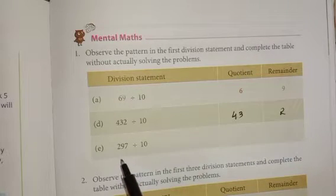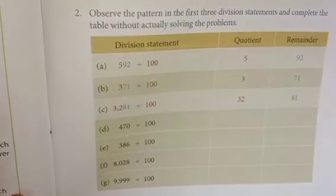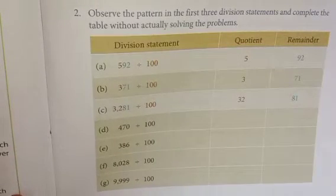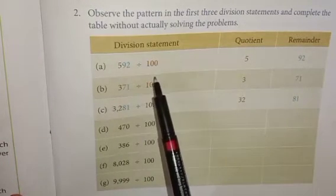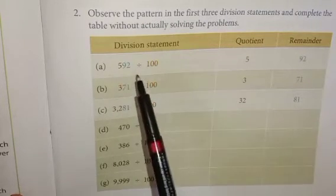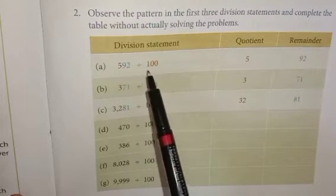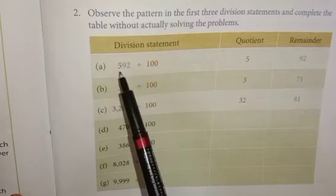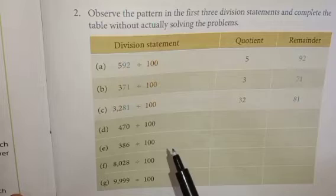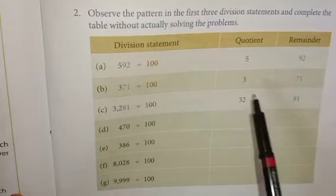Second question: observe the pattern in the first three division statements and complete the table without actually solving the problem. If you divide by 10, the remainder will be only a one-digit number, but if you divide by 100, the remainder will be a two-digit number. So here, 592 divided by 100: 5 will be the quotient and 92 will be the remainder. Same way, 371 divided by 100: 3 is the quotient and the last two numbers — the tens and ones place — 71 will be the remainder.